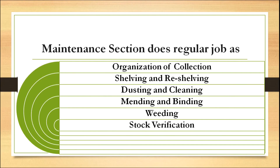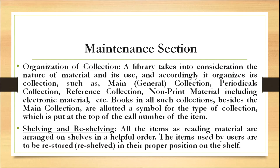In the maintenance section, a library takes into consideration the nature of the material and its use and accordingly organizes its collection — reference collection, non-print material including electronic material, etc. Books in all such sections, beside the main collection, are allotted a symbol for the type of collection, which is placed at the top of the call number of the item.